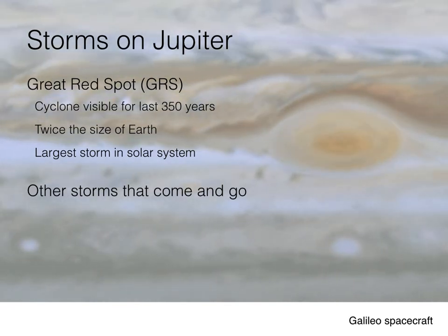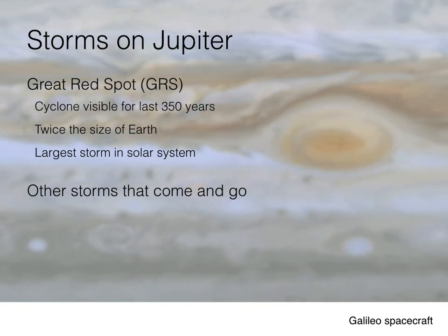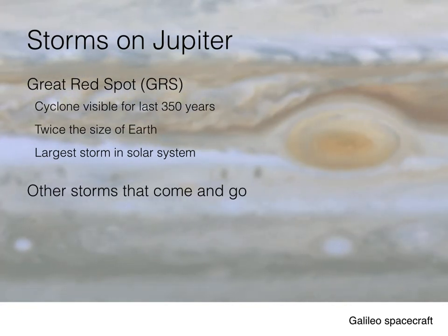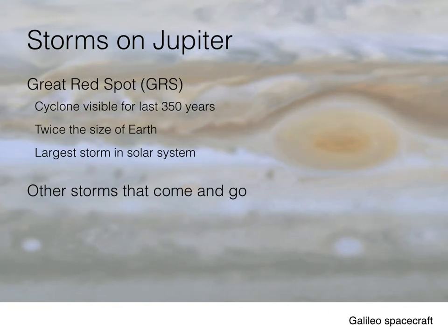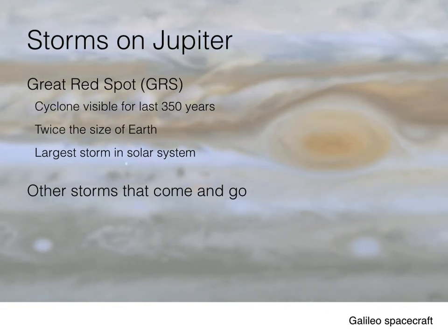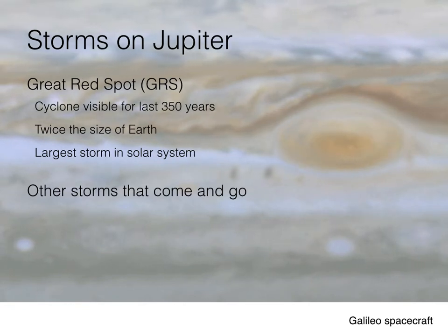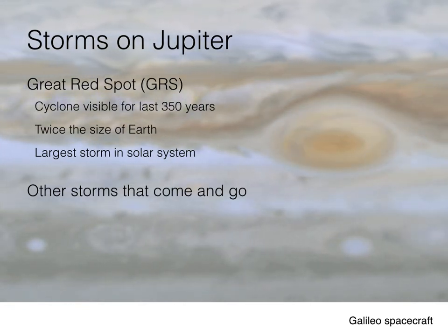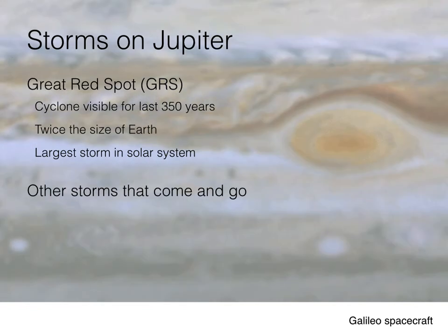As a matter of fact, it's about twice the size of Earth — two Earths could fit in there. It's pretty huge. But there are many other storms that come and go throughout. We can even watch them happen on a time scale of as short as a few months to just a few years.